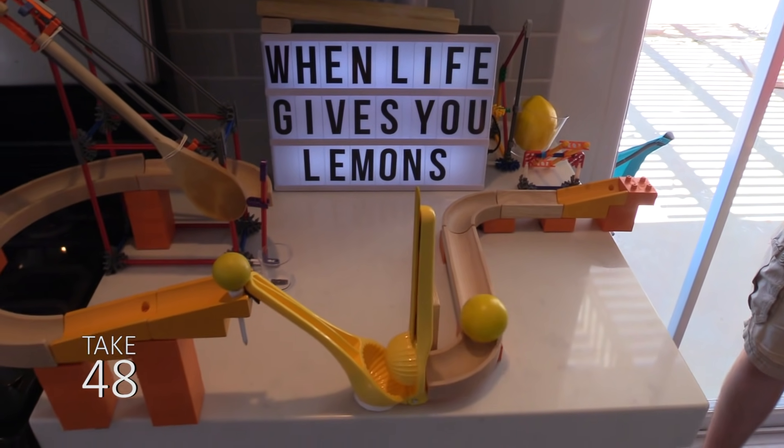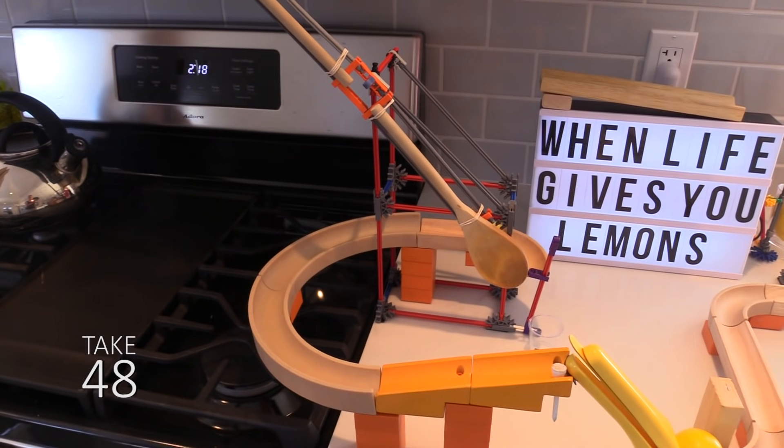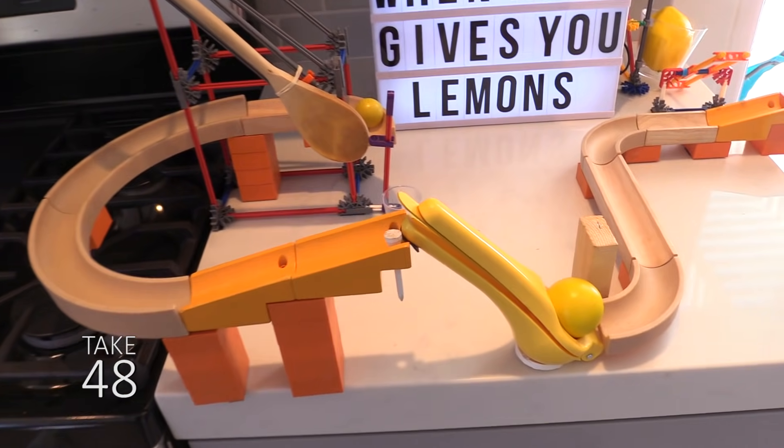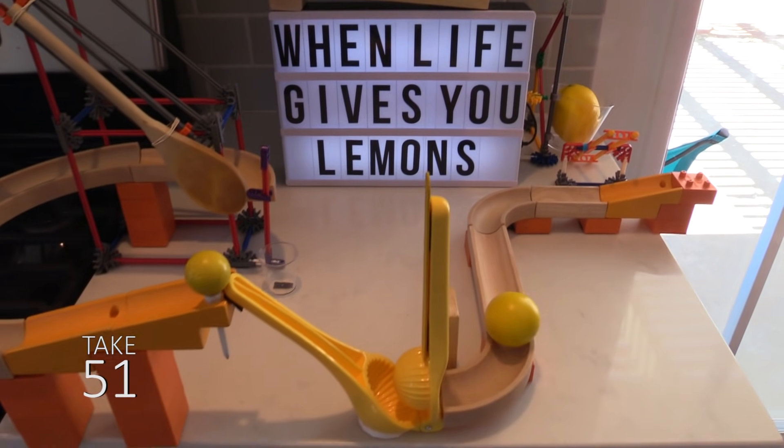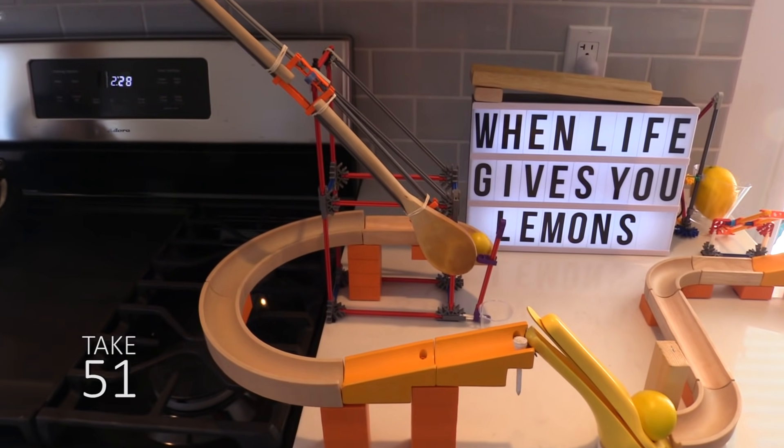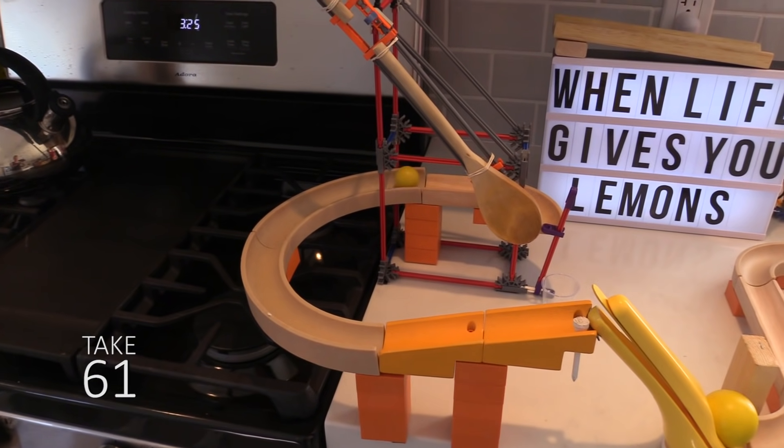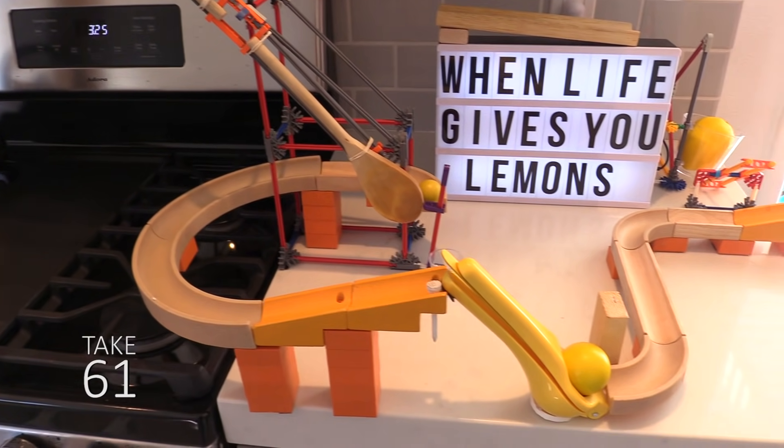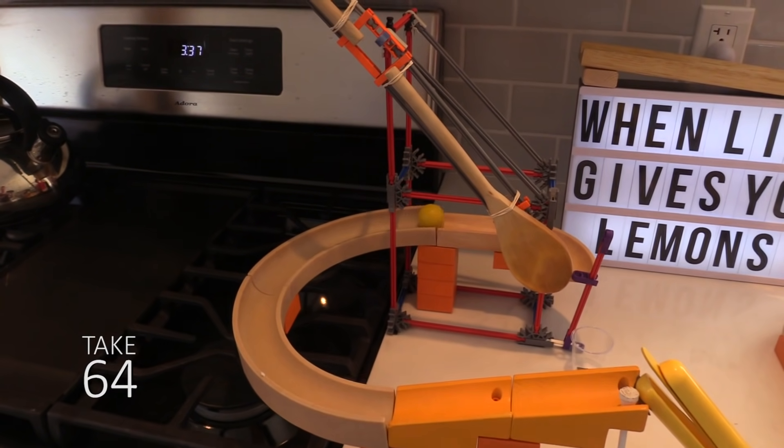Still, there were sections with incredibly specific resets like the K'nex rod and step 3 that had to be perfectly balanced on the ledge of the wooden chute. If it was pushed too far back, the yellow ball wouldn't push it off. So the lesson here is design your setups for easy resets and train yourself to know exactly how to reset it to get it to work.